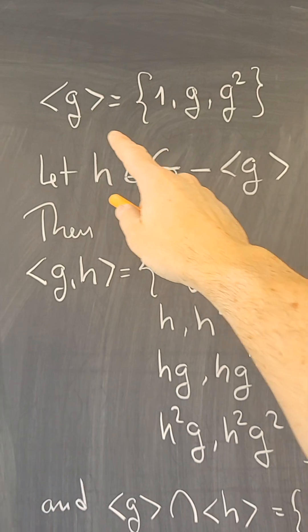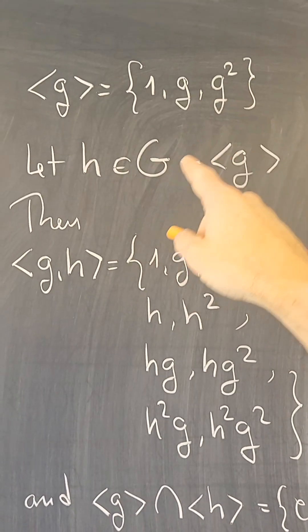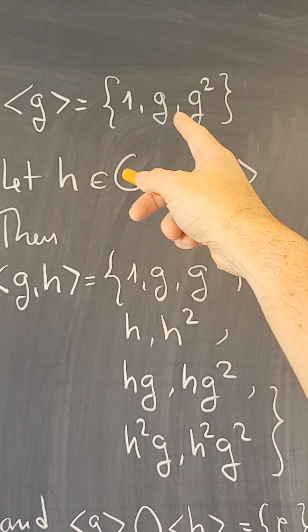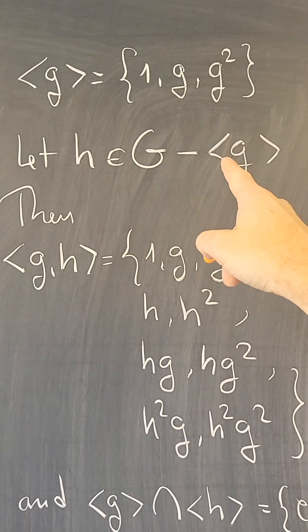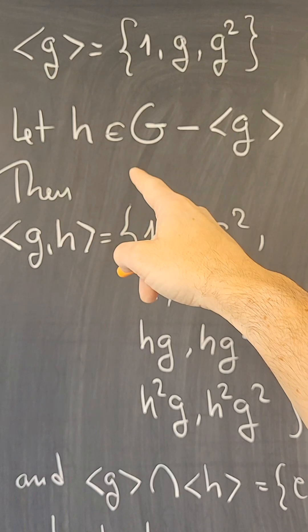Well, the subgroup generated by g has 1, g, and g squared elements. So this is only 3 out of 51 elements, so there are other elements that are in G but not in this group. Take any such h.